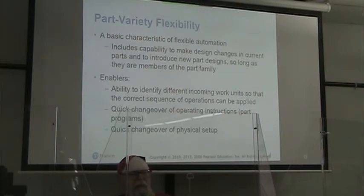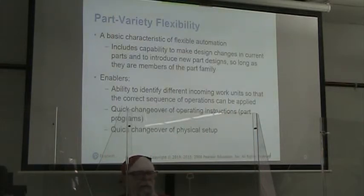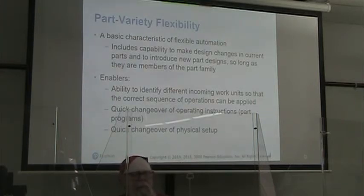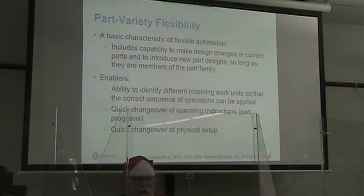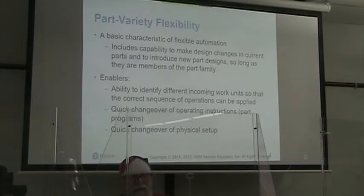Enablers for part variety flexibility include: the ability to identify different incoming work units so that the correct sequence of operations can be applied — obviously this is extremely important — a quick changeover of operating instructions, in other words the part programs, and a quick changeover of the physical setup.